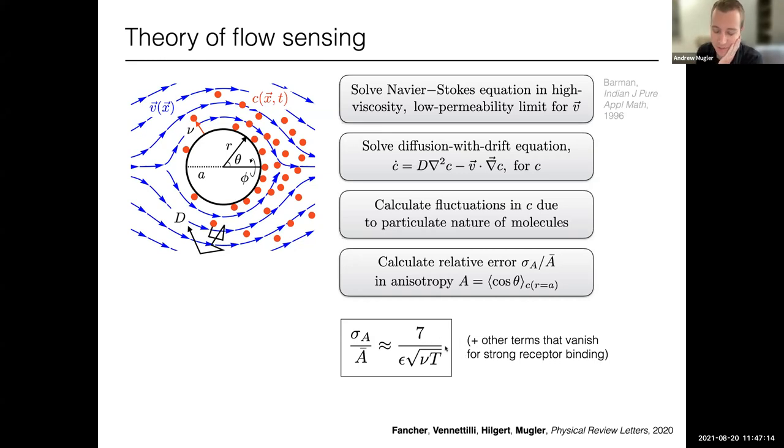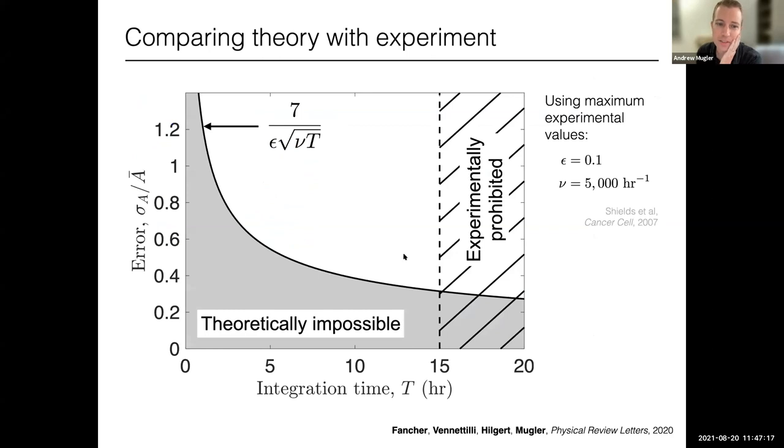And what do we get? We get indeed the same scaling plus some other terms, but those other terms vanish if the receptor binding is diffusion limited so the affinity is strong enough. But we do indeed get a larger pre factor evidently from this limit or flow, the one becomes a seven. So the scaling was right, the seven actually turns out to be kind of important because we have now actually a prediction that has very few parameters, all of which are estimated from experiments and this is the concentration field I was plotting at the beginning.